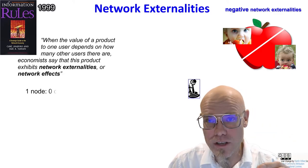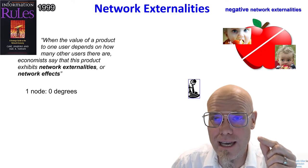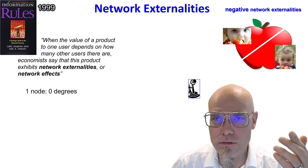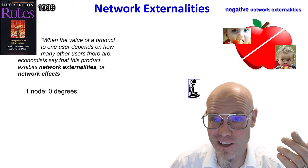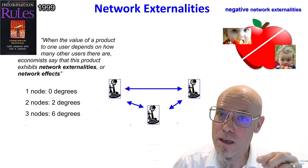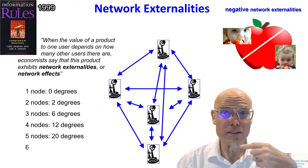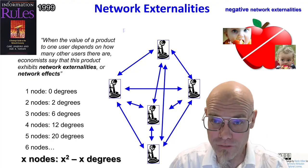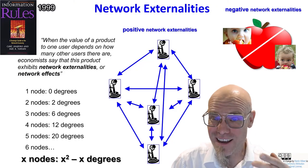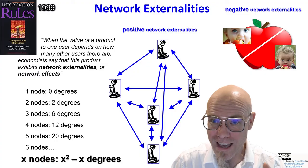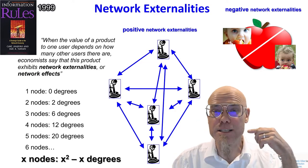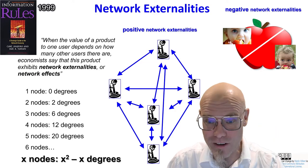In the digital age, if you only have one person in a network, who are you going to call? The more people you have in the network, the more value you get. That is very different for economists — they still don't process it much. The more you have, the more value each one gets, and they get exponentially more value.